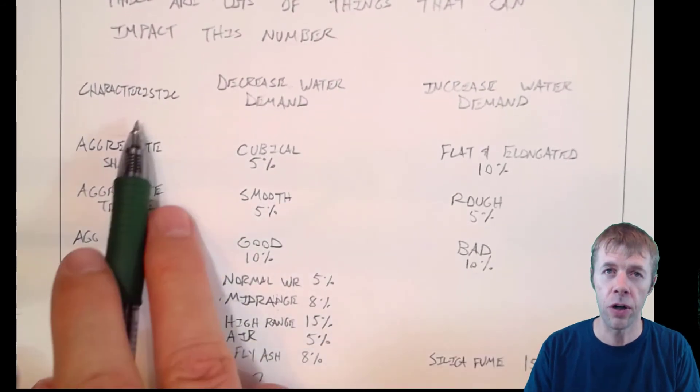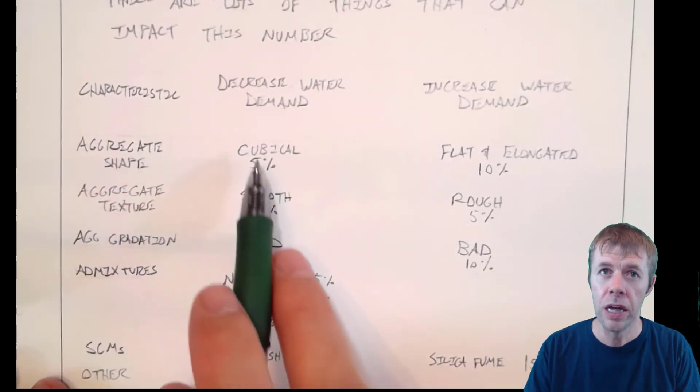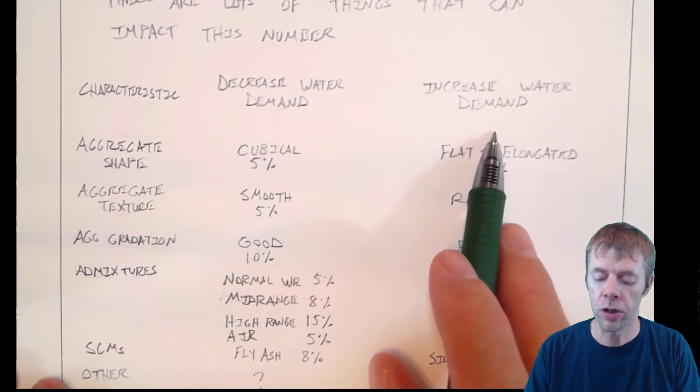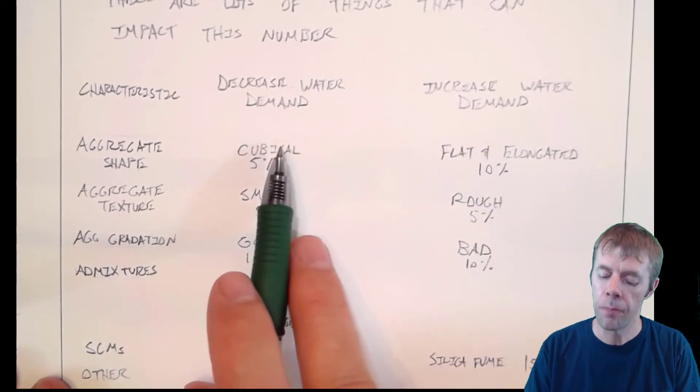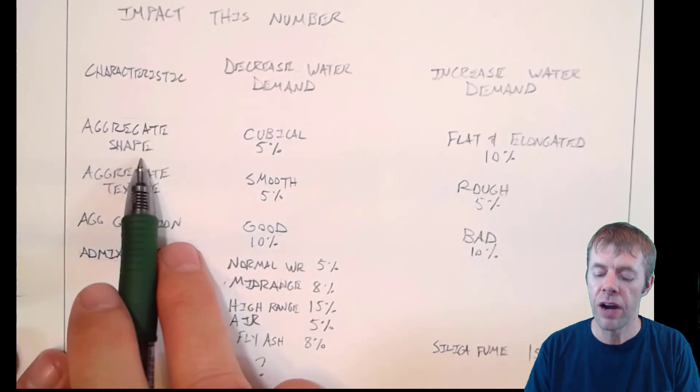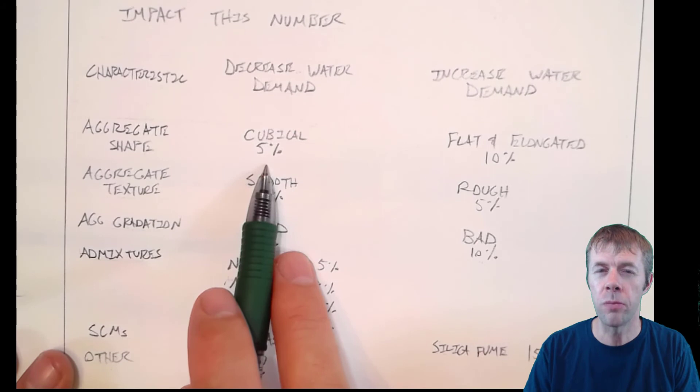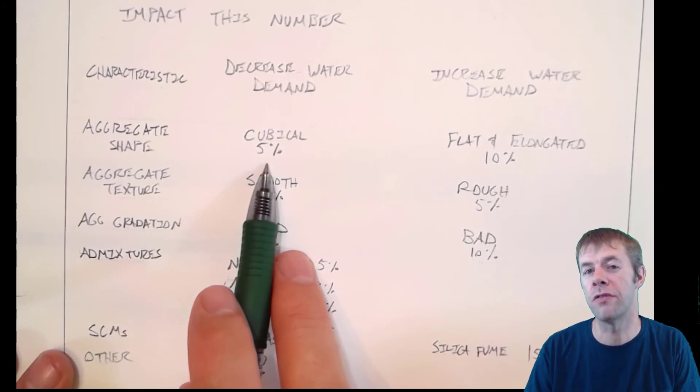There are lots and lots of things that can impact this number. For example, I have a table down here where I talk about a characteristic and I talk about if it will decrease the water or increase the water demand. For example, if I have an aggregate shape, if I have aggregates that are more cubical in shape, it might reduce my water demand by about 5%. I may go from a 0.80 to a 0.75.